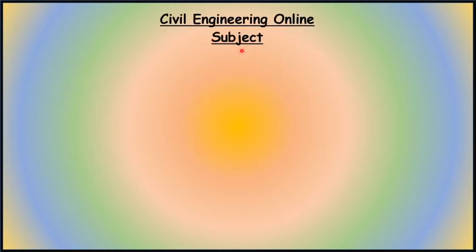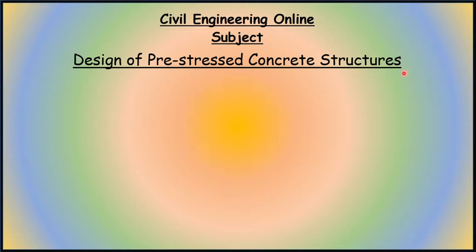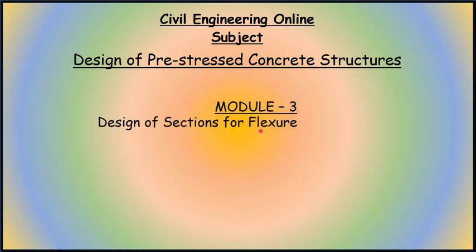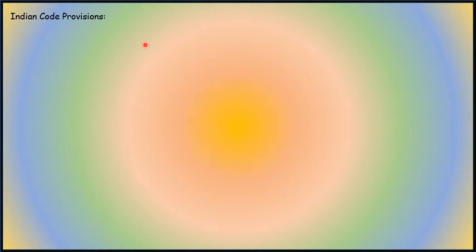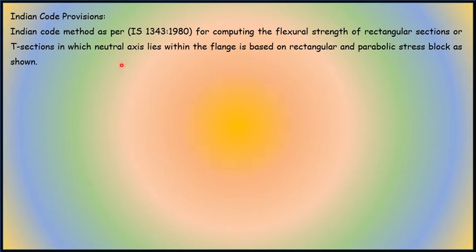Welcome to civil engineering online. Today's subject is design of pre-stressed concrete structures, module 3: design of sections for flexure. The topic is simplified code procedures as per Indian code IS 1343. We will discuss computation of flexural strength for rectangular sections and T-sections, where the neutral axis lies within the flange, based on a rectangular and parabolic stress block.